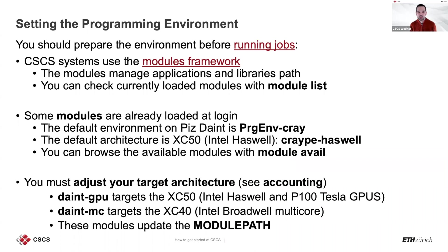The Cray Programming Environment features many modules that allow you to prepare your code before running jobs. CSCS systems use the modules framework to manage applications and libraries by adding paths to your library path and local path for executables. You can check currently loaded modules with 'module list'. When you log in, a default environment on Piz Daint is pre-loaded, including some modules — the default architecture is XC50 with Intel hardware and GPU. Use 'module available' to browse all available modules.